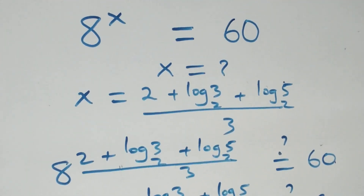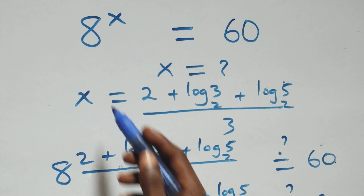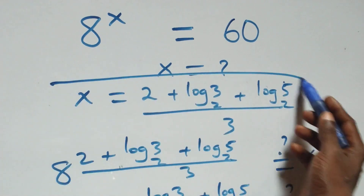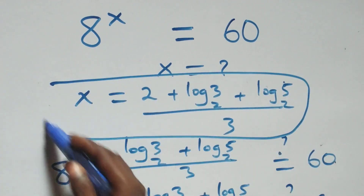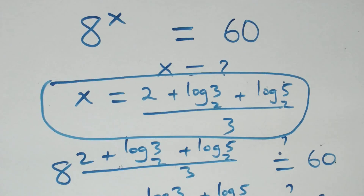Therefore we conclude that x equals (2 plus log 3 base 2 plus log 5 base 2) all over 3 satisfies the given problem. Thank you for watching — don't forget to subscribe for more videos, turn on the notification bell, share this video, give it a thumbs up, and put your comments. See you next lesson, bye for now.